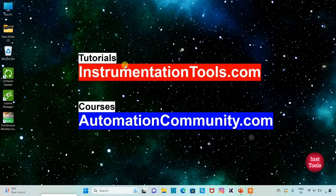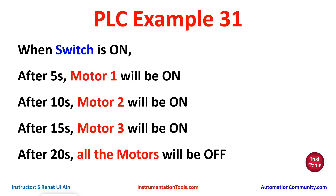Hello friends, welcome to Automation Community. Today in this video we are going to discuss an example in which we will use some timers like T-ON and TP. So let's look at the example first. Example 31: when switch is on, after 5 seconds motor 1 will be on, after 10 seconds motor 2 will be on, and then after 15 seconds motor 3 will be on.